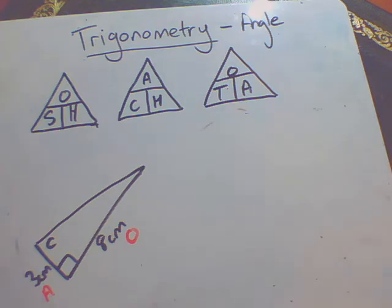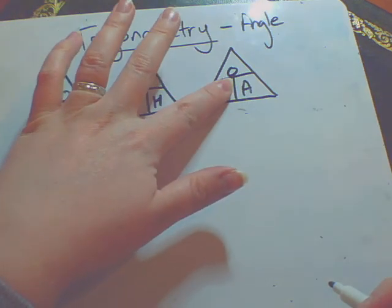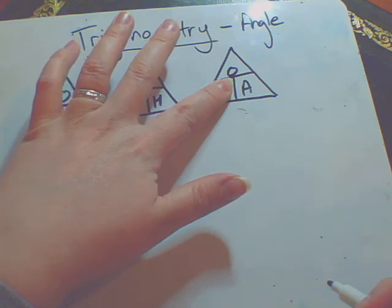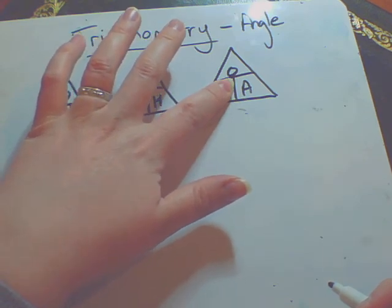Then identify whether it is sin, cos or tan using the triangles at the top. You should have worked out it was a tan triangle. And cover up the letter which you are trying to find. So you should have covered up the T. That is telling me to do O divided by A.